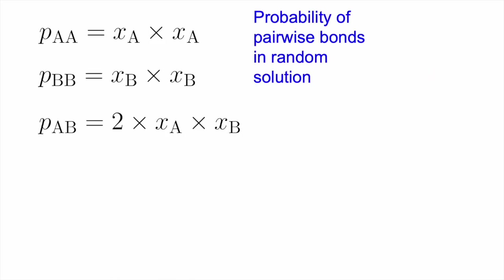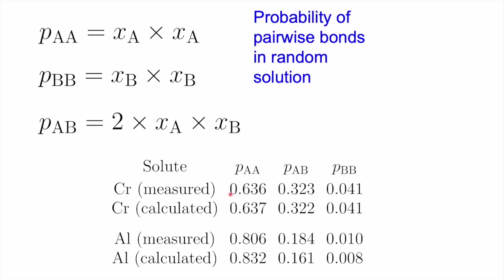Here I'm plotting the binomial distribution expected from a random mixture of atoms, and the darker bars represent the actual distribution obtained — in this case for iron atoms, chromium atoms, and aluminium atoms. You can see very good agreement between the experimentally measured distribution of concentrations and what I would expect from a completely random mixture. So the conclusion is that by mechanical alloying we have actually produced an atomic solution in which the atoms are distributed at random.